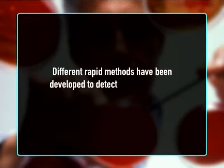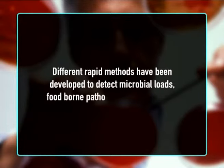Rapid methods for detection of microorganisms in foods: conventional methods for quantitative or qualitative detection of microorganisms and toxins in foods take a relatively long time. Different rapid methods have been developed to detect microbial loads, foodborne pathogens, and their toxins. In addition to being rapid, they are specific, sensitive, accurate, and less labor-intensive.